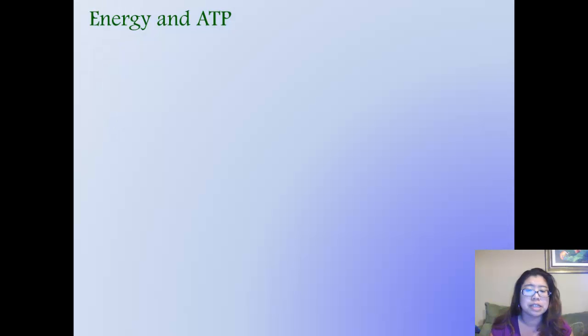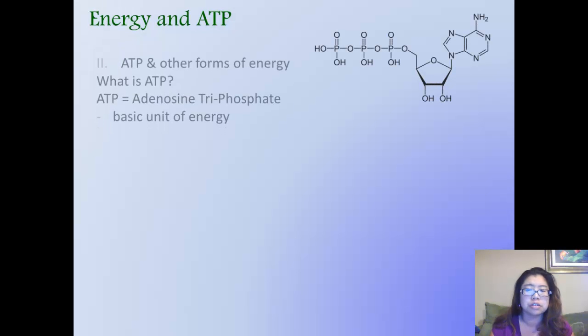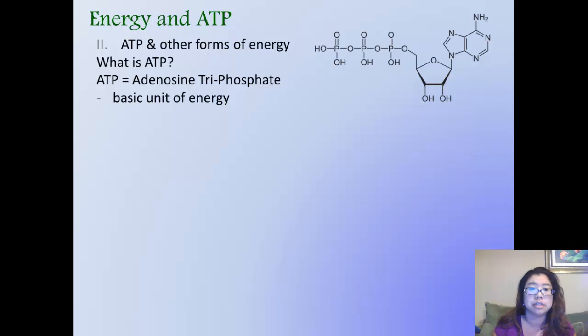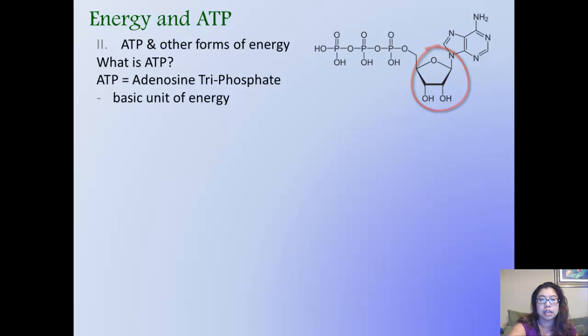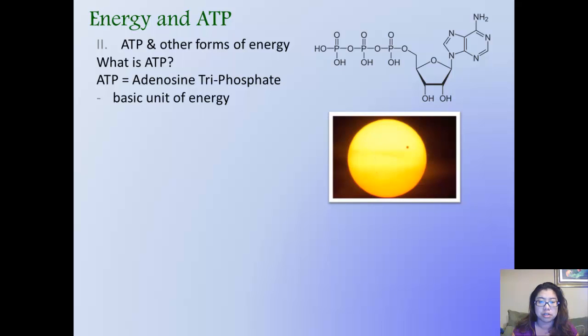The next thing we're going to talk about is ATP and other forms of energy. You hear this word all the time. What is ATP? ATP stands for adenosine triphosphate. The reason it's called adenosine triphosphate is that it's a basic unit of energy. They have adenosine, which is the five-ring carbon unit attached to the nitrogen unit. And then they have, as you can tell, one, two, three, three phosphate bonds. And that's a basic unit of energy. It's very important because it's highly efficient.